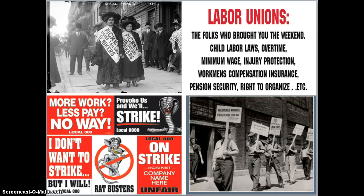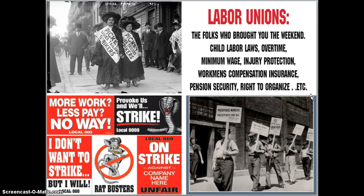Here are some pictures of labor unions — some things that might look very familiar. You have women who wear sashes, like picket signs. Then we have a labor union sign that says 'the folks who brought you the weekend' — child labor laws, overtime, minimum wage, injury protection, workman's compensation insurance, pension security, and the right to organize. That is what labor unions brought for us. Then we have more strike signs, and men carrying picket signs — a wooden bar with a poster of whatever they were against.